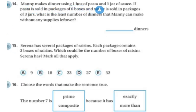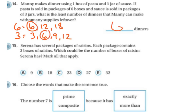What multiple of 7 is also a factor of 7? That would be 7. Manny makes dinner using one box of pasta, one jar of sauce. If pasta is sold in packages of 6 boxes and sauce is sold in packages of 3 jars, what is the least number of dinners Manny can make without having supplies left over? So again, you're going to list out your factors. And so on this, I'm going to list out my multiples. I'm going to find the first one they have in common. 6 is not, and it looks like 6 is going to be it. So you can make 6 dinners without having any left over.